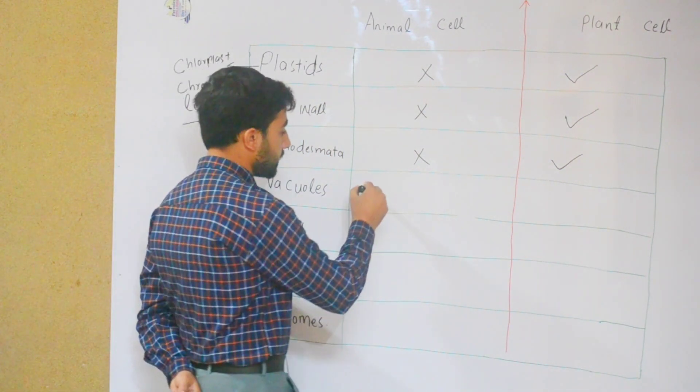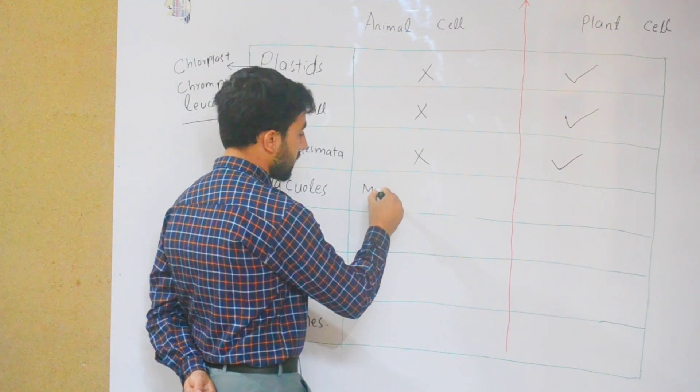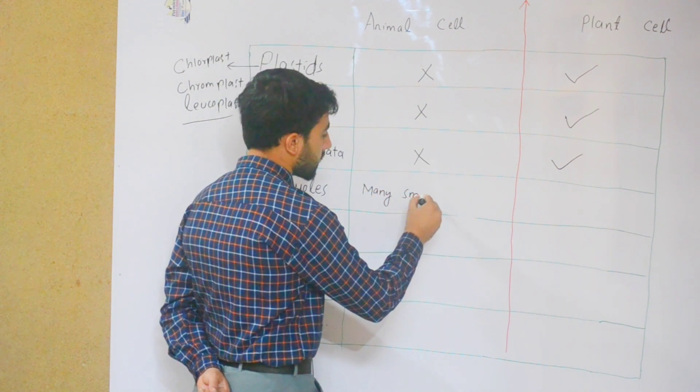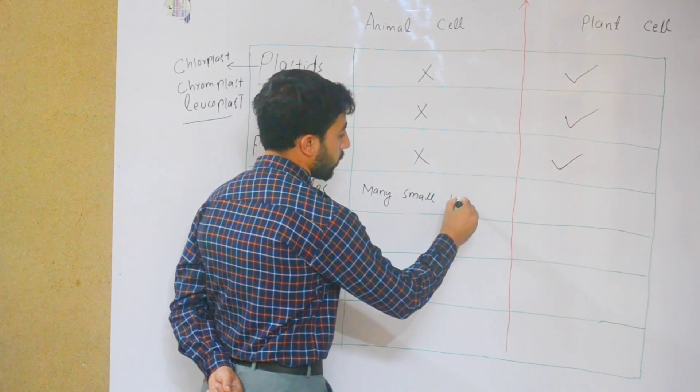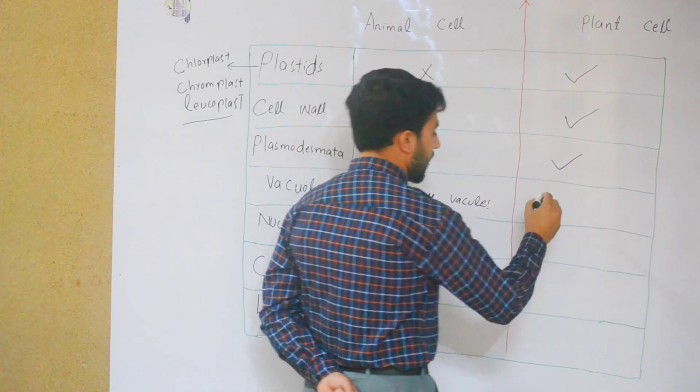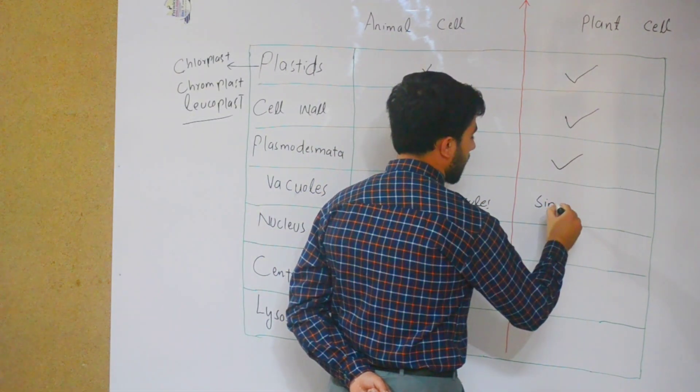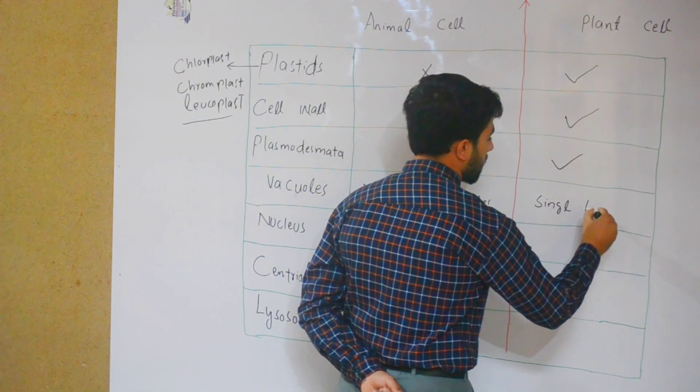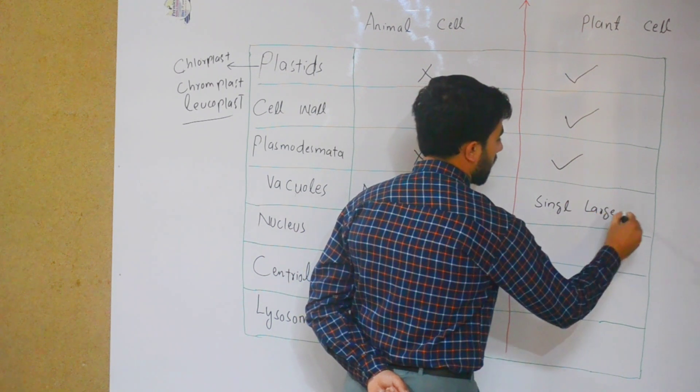For animal cells, many small vacuoles. For plant cells, single large vacuole.